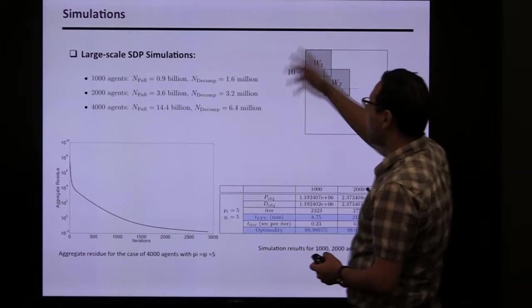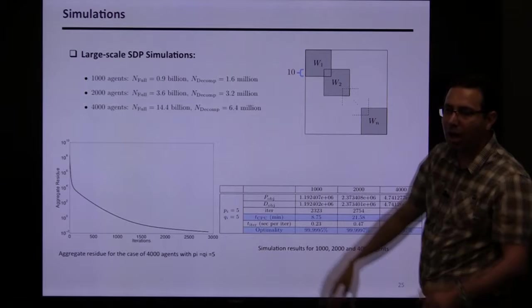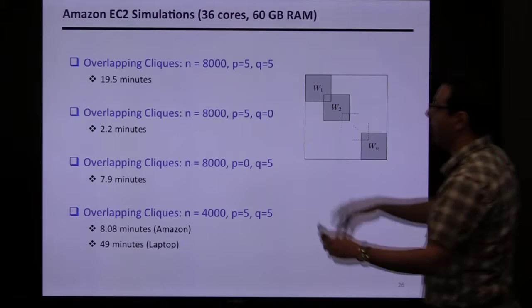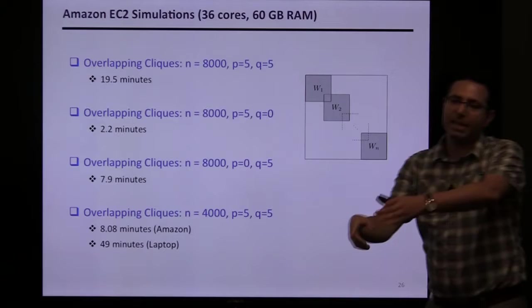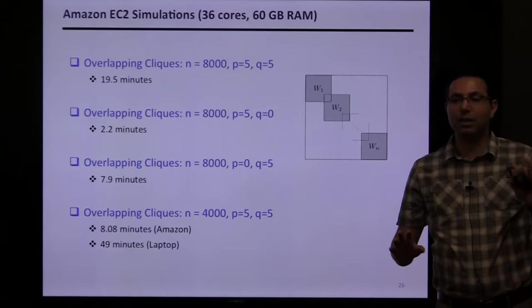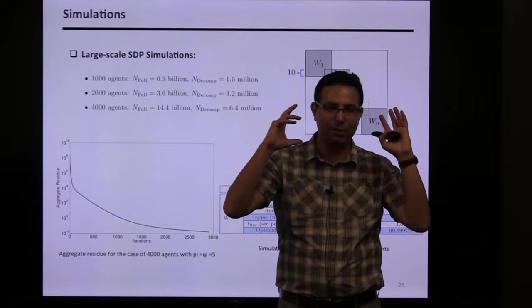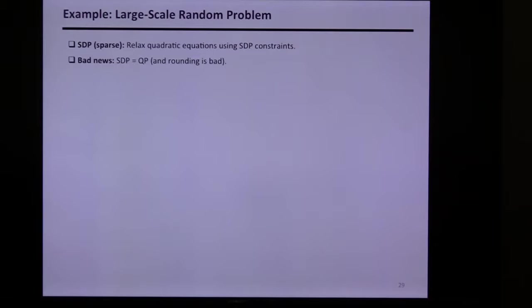For example, we tried it on problems where without decomposition there are 14 million variables; after treewidth decomposition and removing redundant variables via matrix completion, it's 6 million. We wrote the code in C++ and implemented it on Amazon servers with 36 cores. Depending on the number of constraints, we can solve the problem in 2 to 20 minutes. In a laptop it takes longer. The corresponding calculation in MOSEK (state-of-the-art) takes more than two years. Iterations are fast — about one microsecond each — so many iterations still pay off.